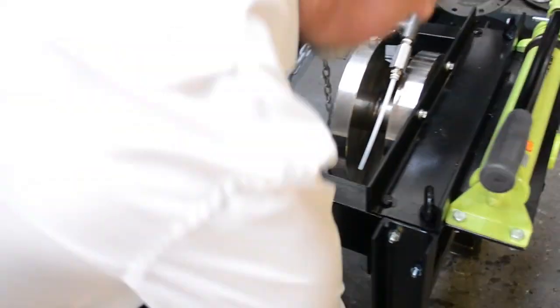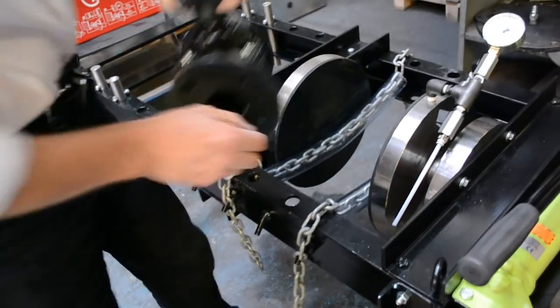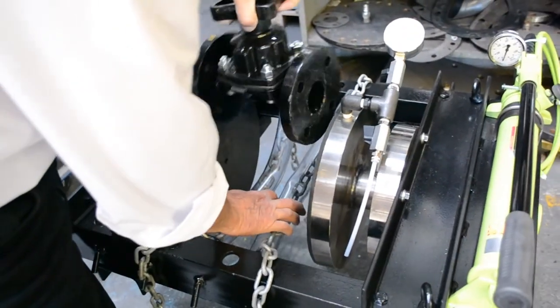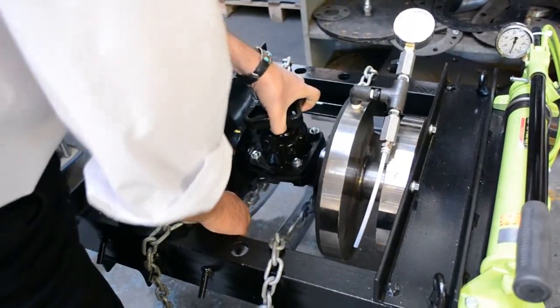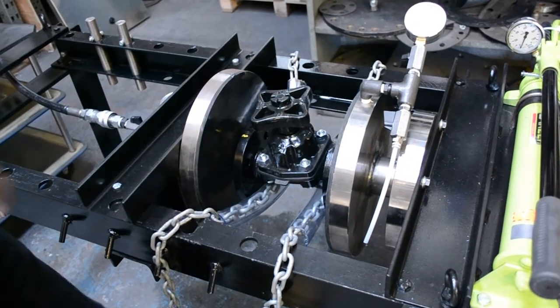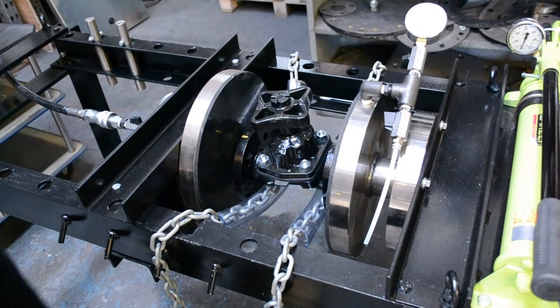Attach the chains to the test bench, far enough apart to support the valve body while it's being loaded for testing. Ensure that the valve is open and positioned so that the holes in the end plates which will pressurize the valve align with the holes in the flange.